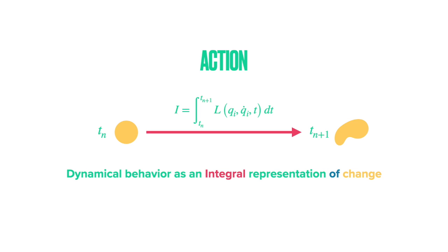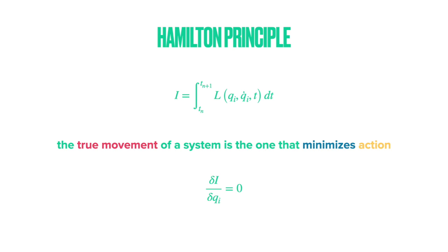The integral of the Lagrangian I is called the action. Having defined the action, we are ready to introduce the Hamilton principle. According to the Hamilton principle, the true movement of a system is the one that minimizes action.